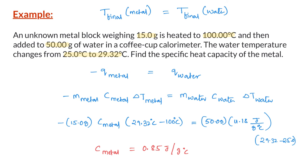So in this video, we learned two things: one, use calorimetry to calculate the enthalpy change of an aqueous reaction, and two, use calorimetry to calculate the specific heat capacity of an unknown metal.